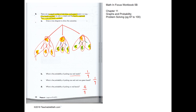What is the probability of getting one red and one green? For one red and one green, that is one scenario, so the probability is one ninth. What is the probability of getting no red? When it's no red, we look at blue-blue, blue-green, green-blue, and green-green — there are four possible outcomes. So the probability of getting no red is four ninths.